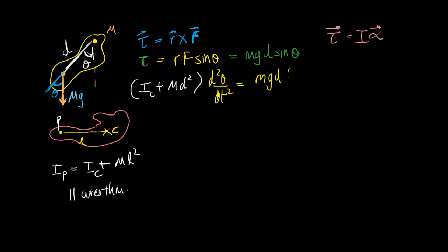And that should be equal to mgd, and sine of theta is theta approximately because this angle here is quite small, actually very small. So we can assume that sine theta is approximately theta.